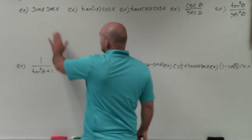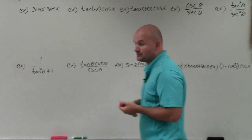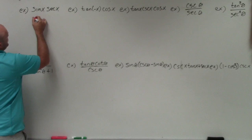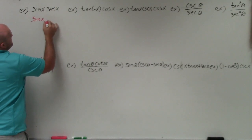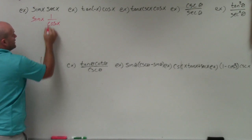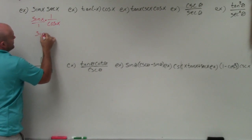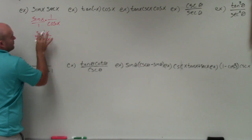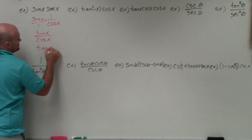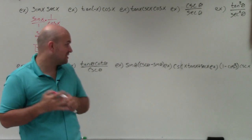So if we were going to multiply sine of x times secant of x, I can rewrite this in terms of sines and cosines. Secant is the same thing as 1 over cosine of x. Multiplying across gives sine of x over cosine of x. Sine over cosine is equivalent to tangent of x, and that would be our simplified expression.